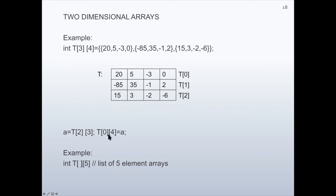Another example: the value of the element at row 0 and the fourth column. Since we have only four elements per row — columns 0, 1, 2, 3 — we don't have column 4, but it will correspond to the next element. This means the value of 'a' is going to be stored into that out-of-range location. This is out of range again, so be careful.